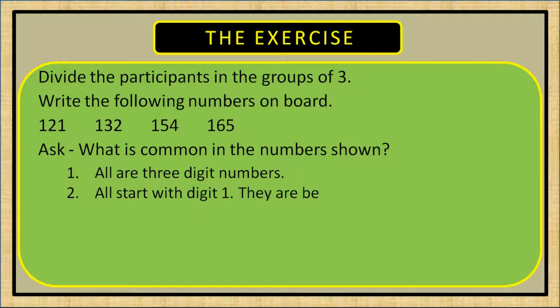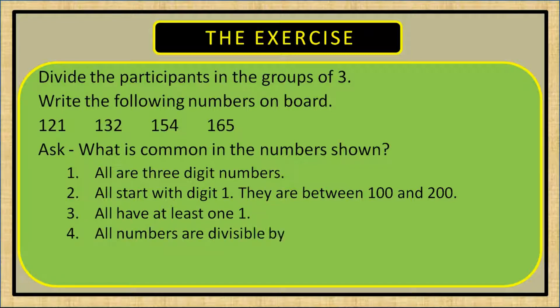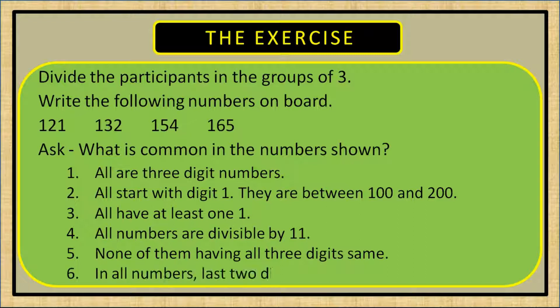All start with digit 1. They are between 100 and 200. All have at least one 1. All numbers are divisible by 11. None of them have all three digits the same. In all numbers, the second digit is greater by 1 than the third digit.